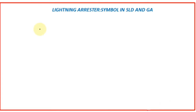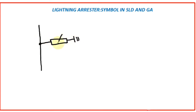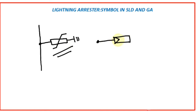In some single line diagrams, the surge arrestor is also indicated in a different way. The surge arrestor body, the earth connection — this is another way of representing a surge arrestor in a single line diagram. Both ways — either symbol — the surge arrestor could be indicated. You can choose any of them.